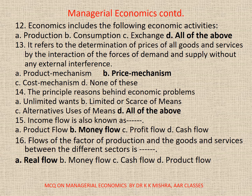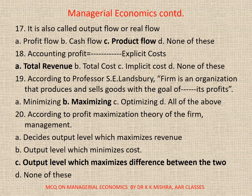Question 15: Income flow is also known as A. product flow, B. money flow, C. profit flow, or D. cash flow. Correct option is B: money flow. Question 16: Flows of the factors of production and the goods and services between the different sectors is A. real flow, B. money flow, C. cash flow, or D. product flow. Correct option is A: real flow. Question 17: It is also called output flow or real flow. Correct option is C: product flow. Question 18: Accounting profit is equal to total revenue minus explicit costs. Correct option is A. Question 19: According to Professor S.E. Lansbury, a firm is an organization that produces and sells goods with the goal of dash its profits. A. minimizing, B. maximizing, C. optimizing, D. all of the above. Correct option is B: maximizing.